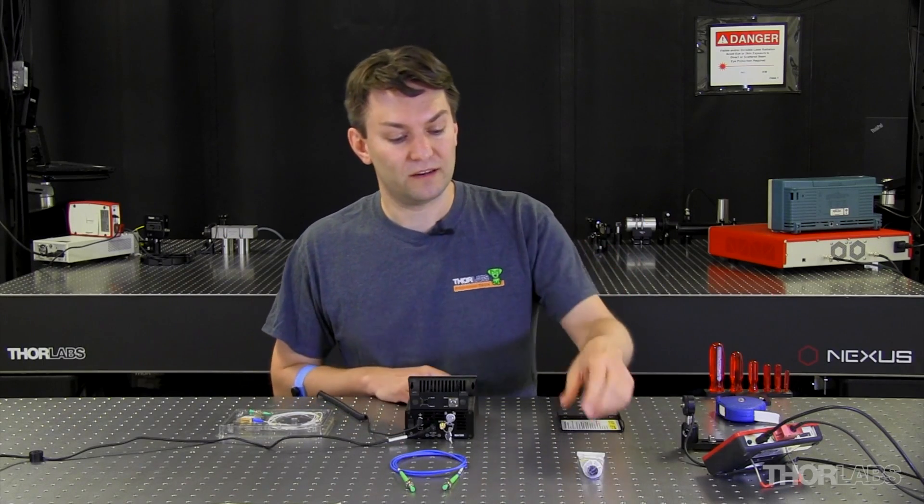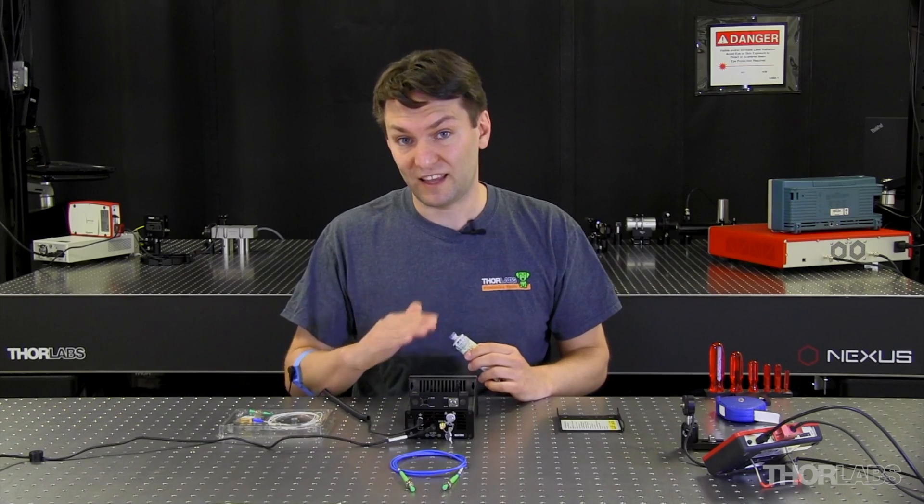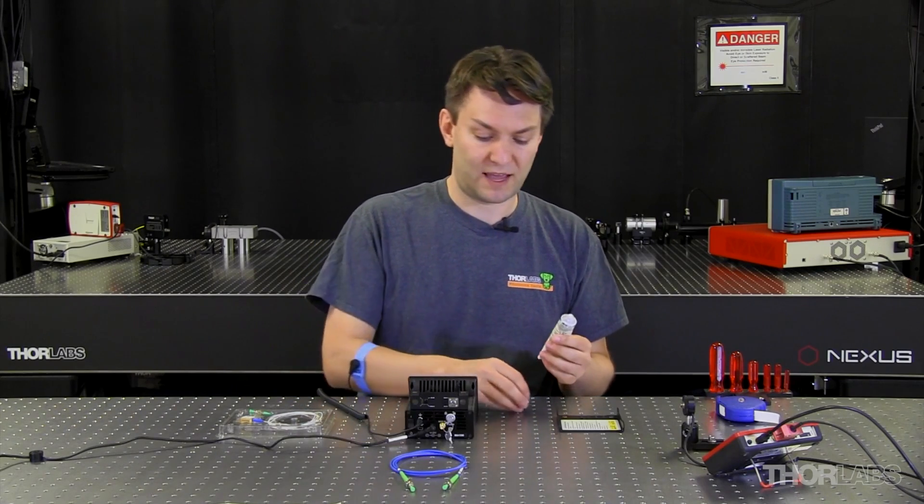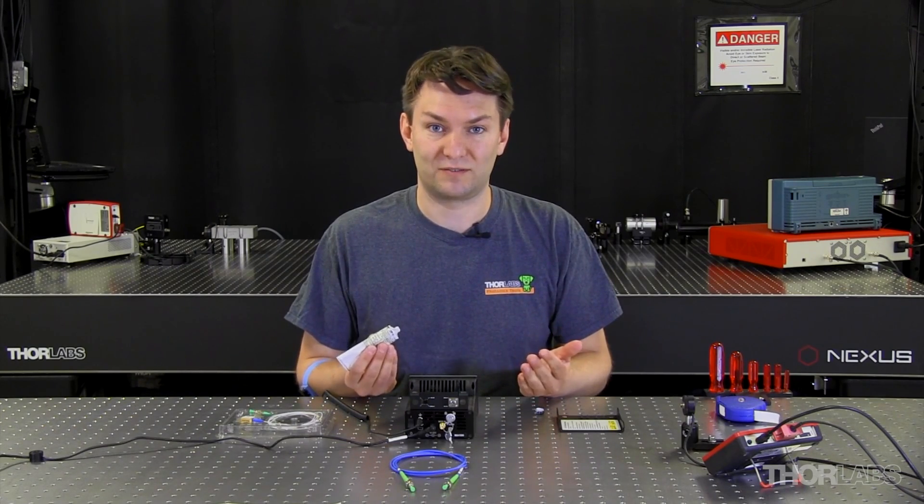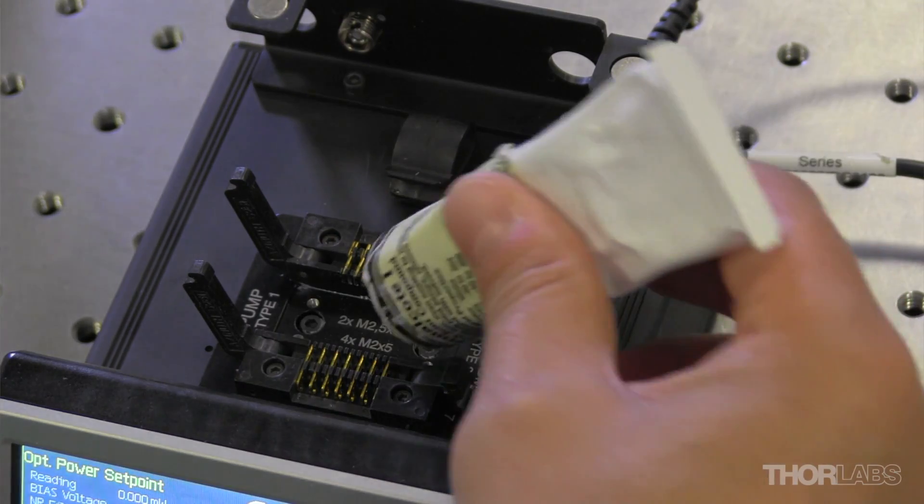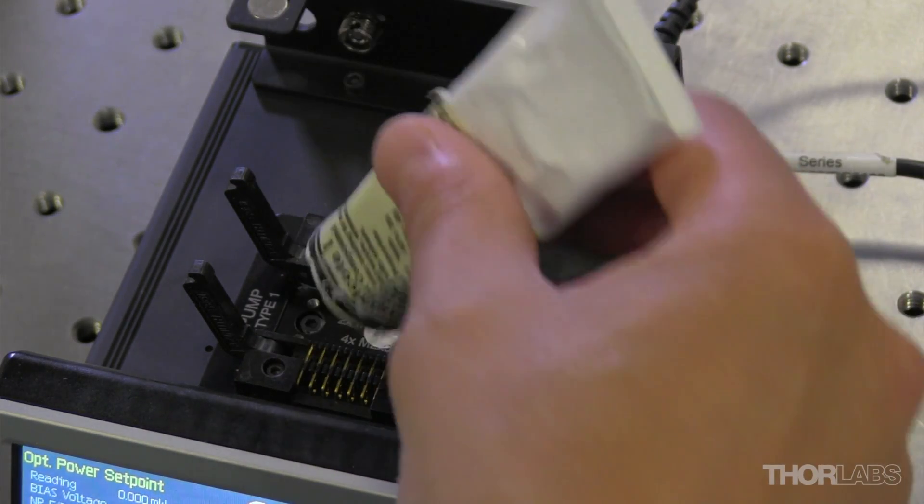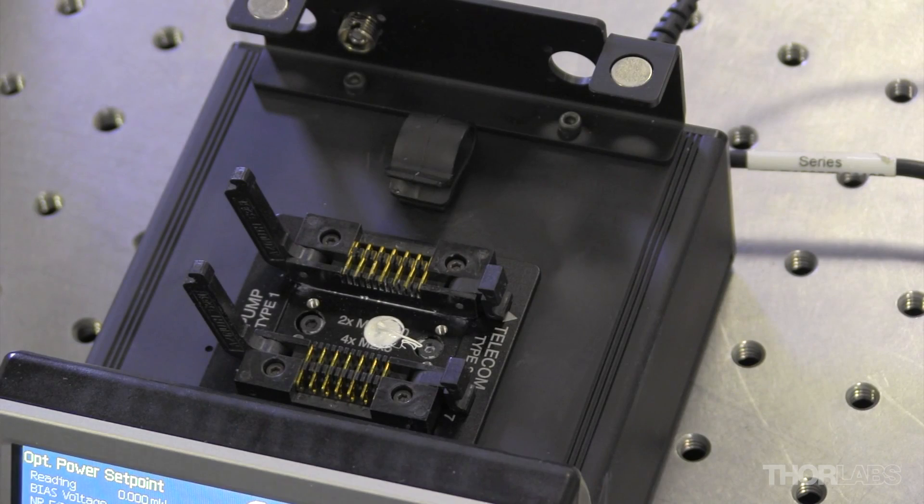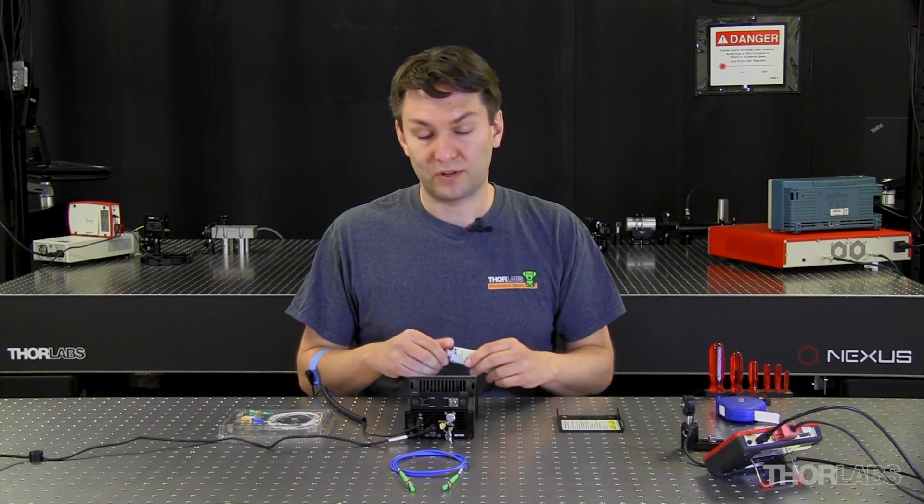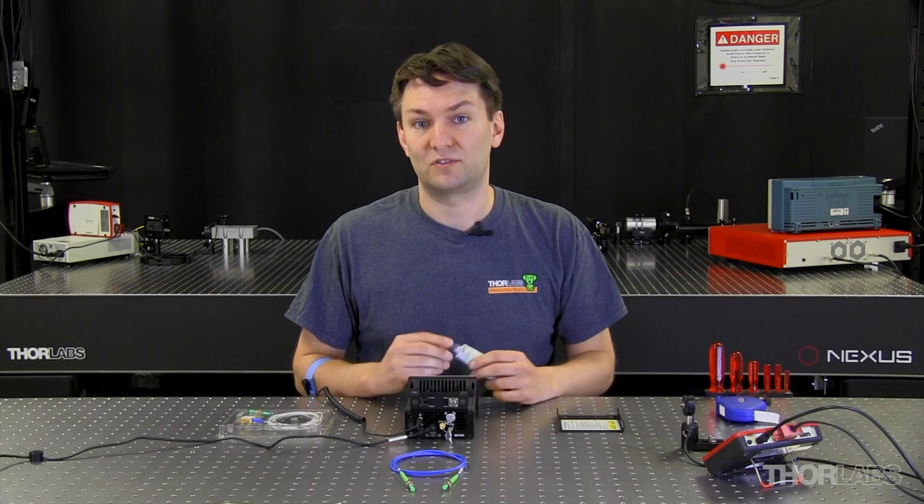So when putting in thermal grease, you want to make sure that you only put a little bit. It's only a thin layer of thermal grease between the bottom of the package and the metal inside your mount. You are not putting toothpaste on a toothbrush. You're just putting a slight little dab. If you accidentally put too much thermal grease, then you want to make sure that you clean it up with a kim wipe or a q-tip before you put the laser into your mount. If there's too much grease, it will spread out and make a mess all over your mount.